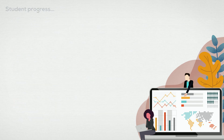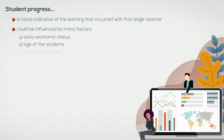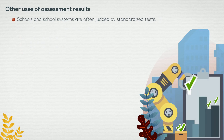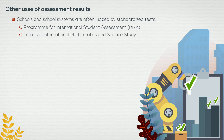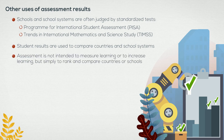Unfortunately, significant research has found that student progress is rarely indicative of the learning that occurred with that single teacher. Student scores could just as easily be influenced by many factors such as socioeconomic status, age of the students, and previous exposure. Schools and school systems are often judged by standardized tests like the Program for International Student Assessment or the Trends in International Mathematics and Science Study, which are considered independent of the curriculum. Student results are used to compare countries and school systems, but individual student results are never published. This means that the assessment is not intended to measure learning or to increase learning, but simply to rank and compare countries or schools.